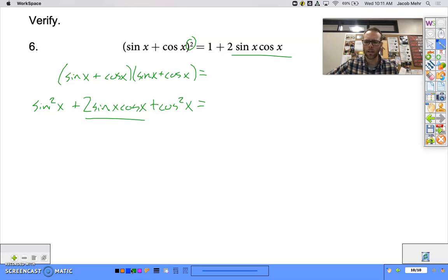And then I say, okay, well, my goal has a one here and I don't have a one, but I have a sine squared plus cosine squared. And what do we know about sine squared plus cosine squared? That is one. So I'm going to use my Pythagorean identity to substitute one in for sine squared plus cosine squared.